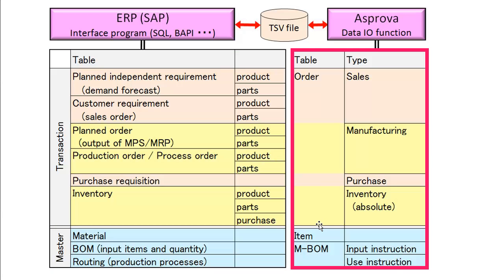The corresponding data of Asprova tables are only three: Order, Item, and Bond. Orders has several types: Sales, Manufacturing, Purchase, and Inventory. Bond has two types: input instruction and use instruction. Input instruction specifies input items and quantity. Use instruction specifies usable resource and processing speed for each process.